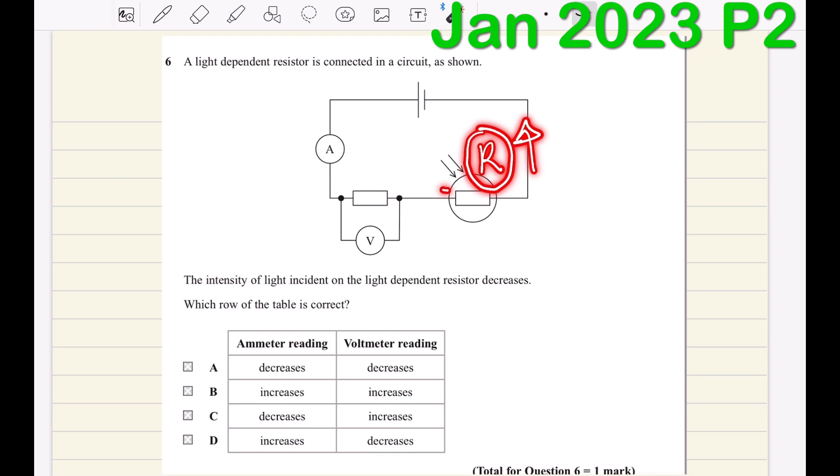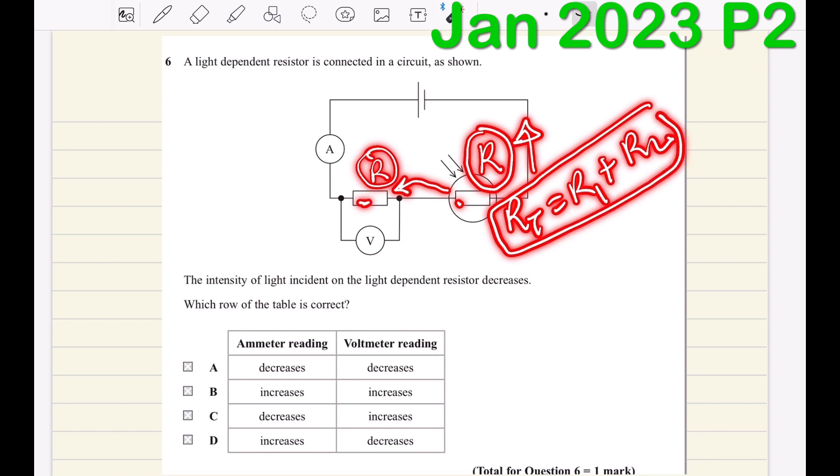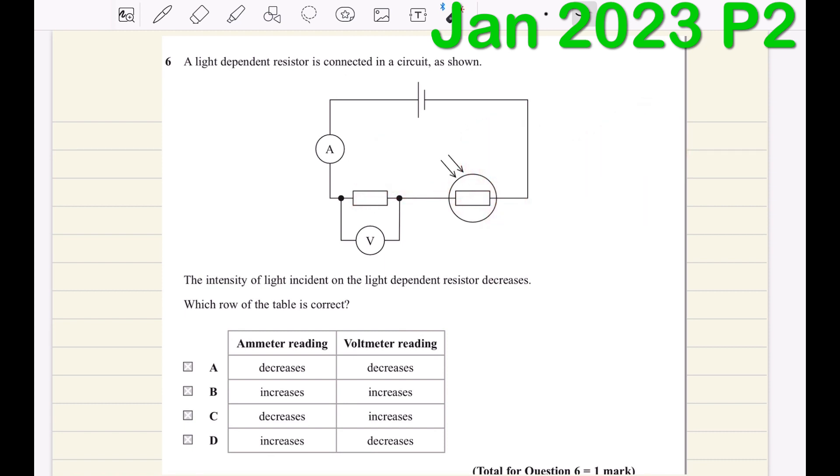...and this is added to the resistance of the fixed resistor because they are connected in series. So R total equals R1 plus R2. This means the total resistance for the whole circuit increases.